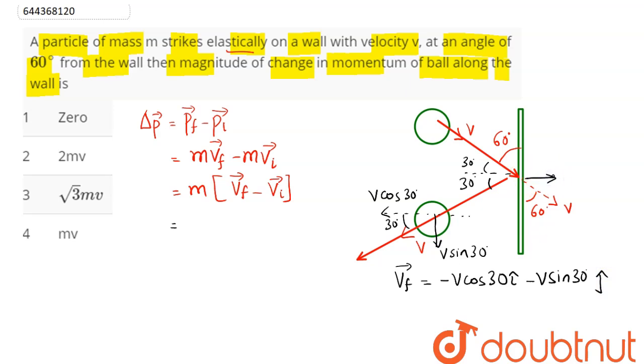In the similar manner, initial velocity here can be said as V cos 30 I cap and V sin 30 J cap. As initial velocity vector here is plus V cos 30 I cap and minus V sin 30 J cap.